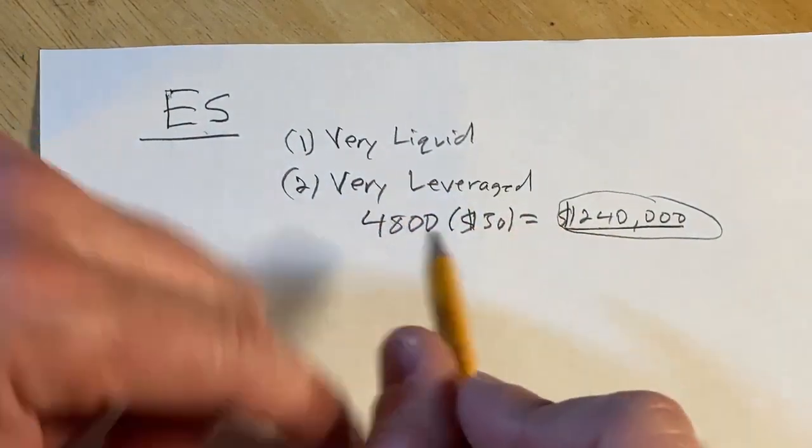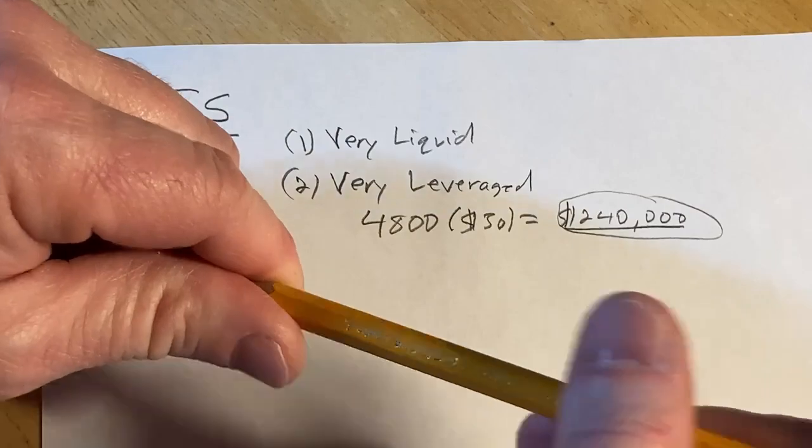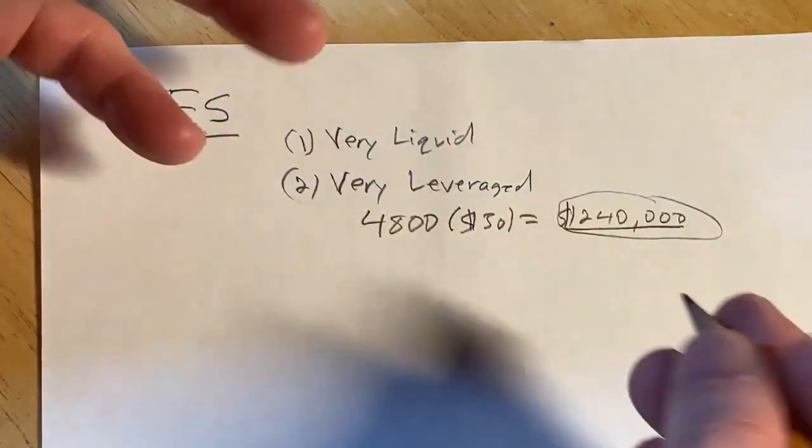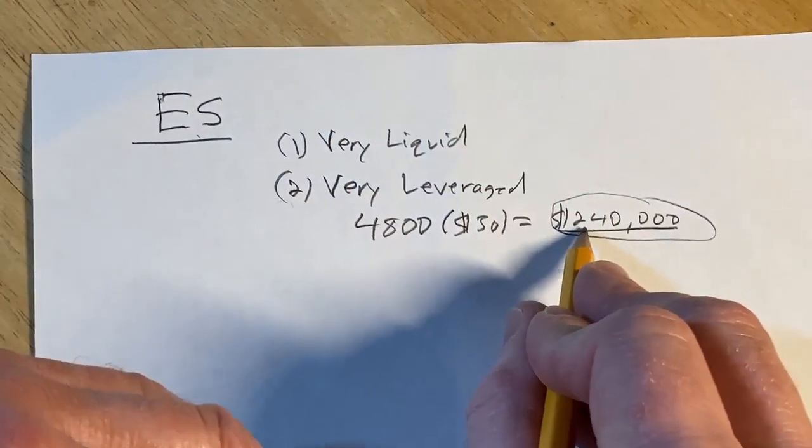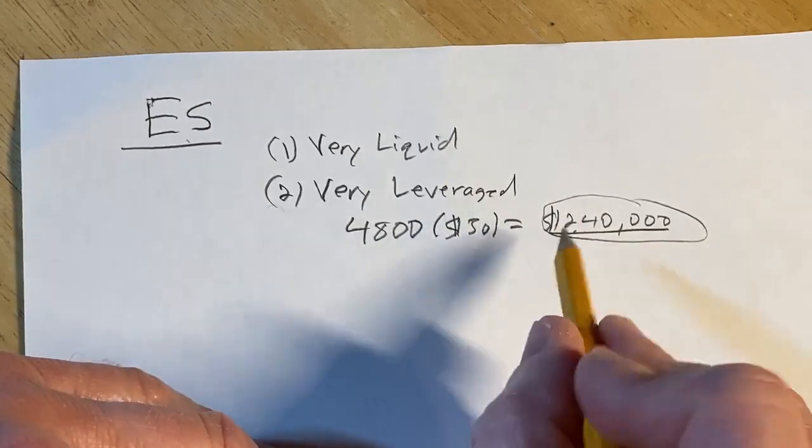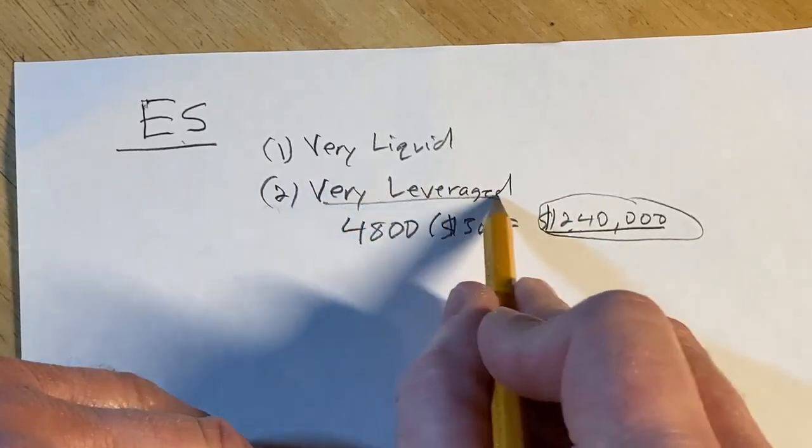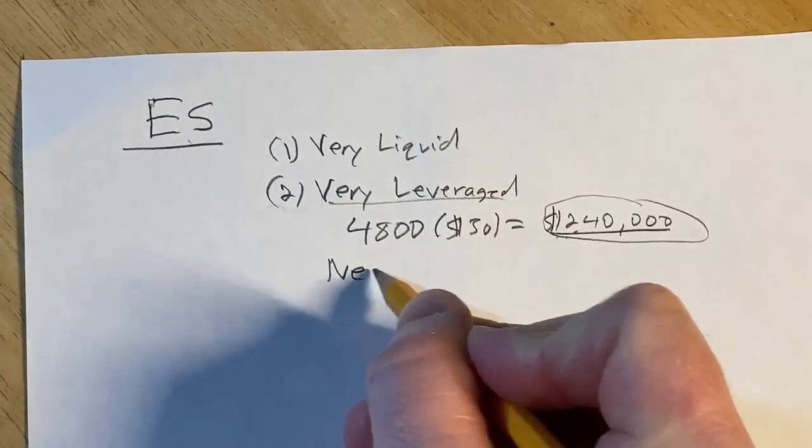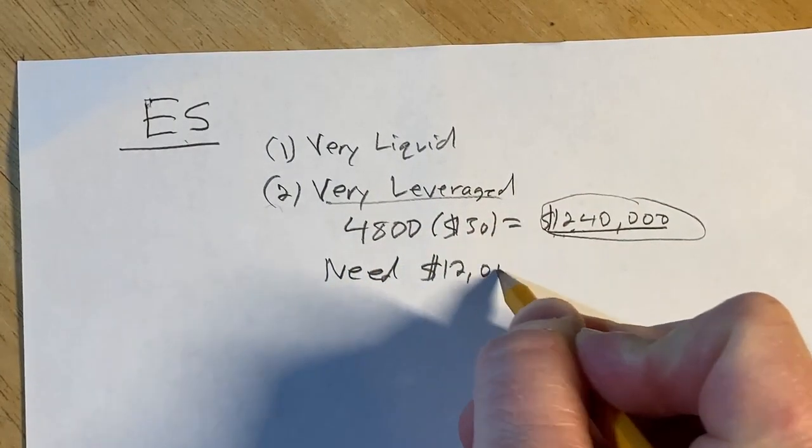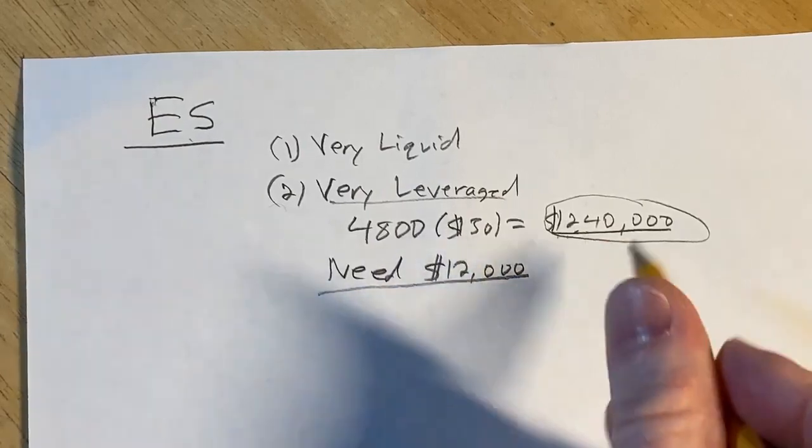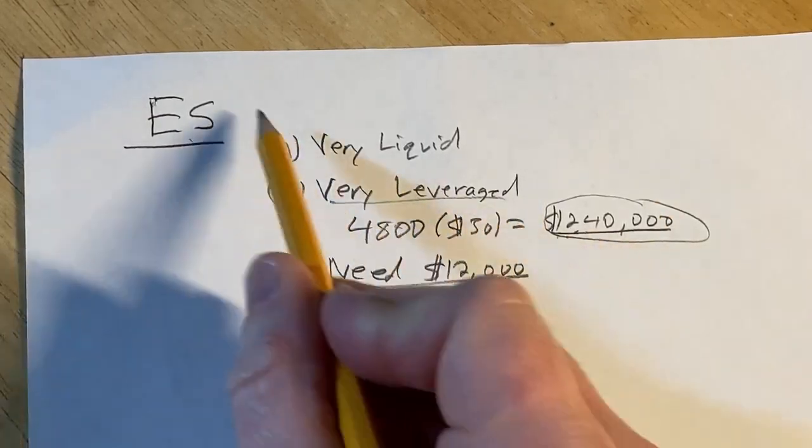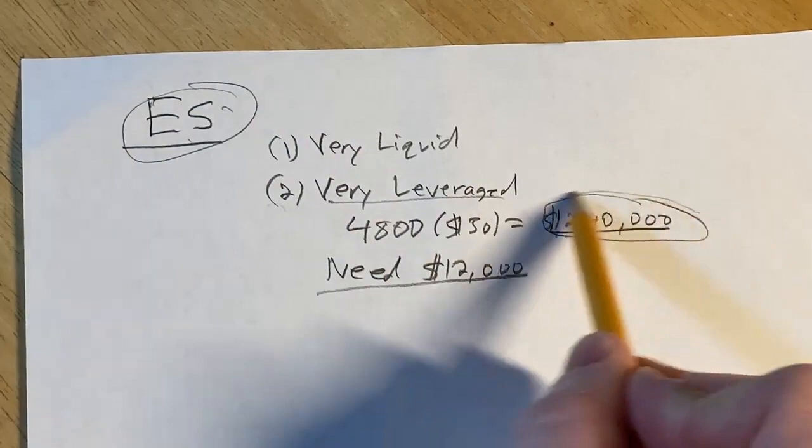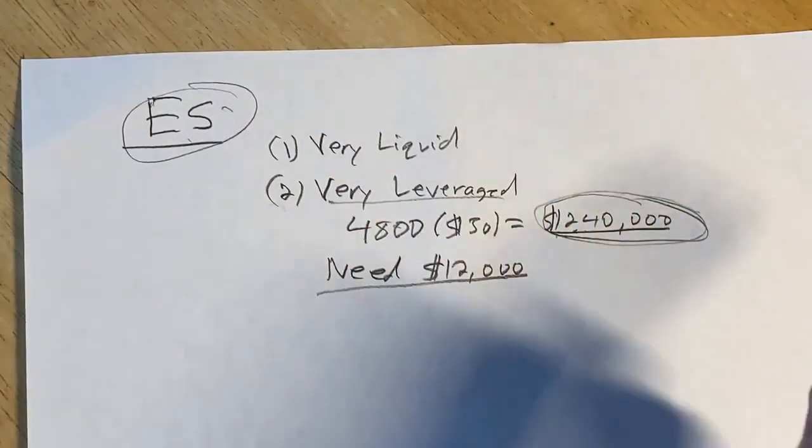So if you think about that, because it's leveraged, well, if you believe that in order to make money, you should have money, this allows you to make a considerable amount of money because you can buy this, you can buy one contract. And I don't know how much you need, but let's just say it's about $12,000. So for about $12,000, you can buy one ES contract and it's worth that much. So that's pretty insane.